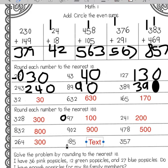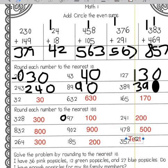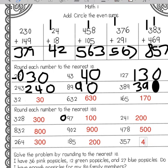One hundred eighty-five: one in the hundreds place, eight in the tens place. The eight is going to cause us to round up to a two, so it will be 200. And here we have 357: three in the hundreds place, five in the tens place. The five will make this round up to 400.